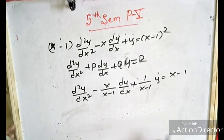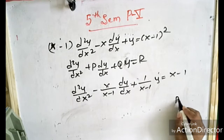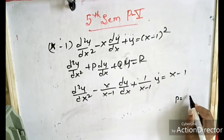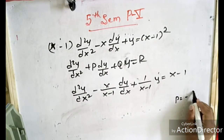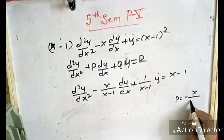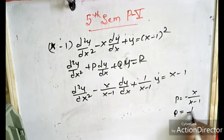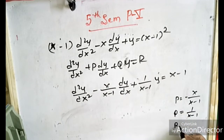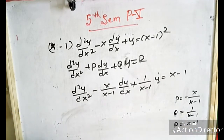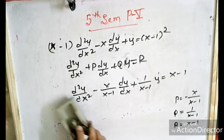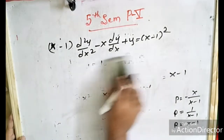Now the P, Q, R values are: P equals minus x divided by (x minus 1); Q equals 1 divided by (x minus 1); R equals (x minus 1).